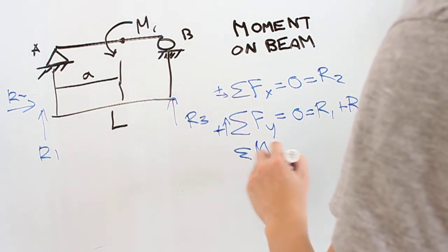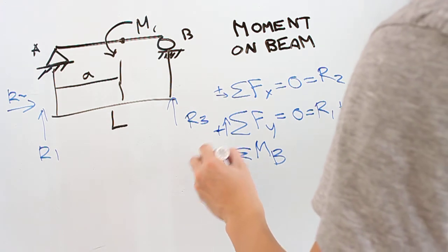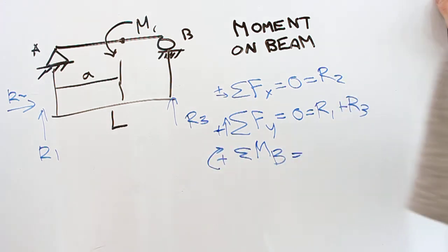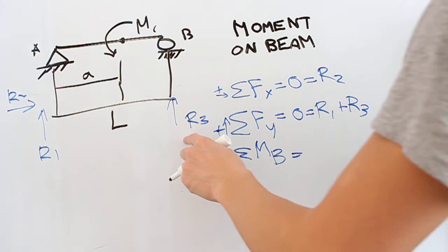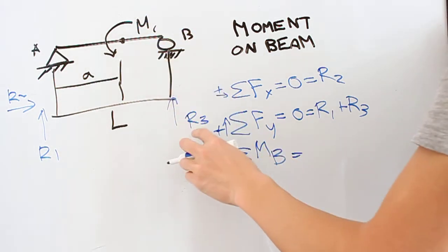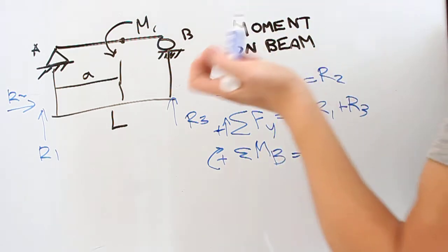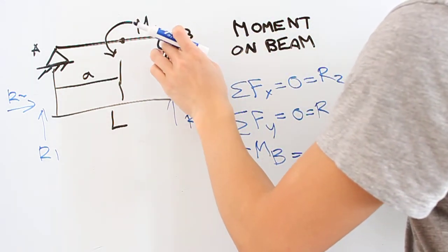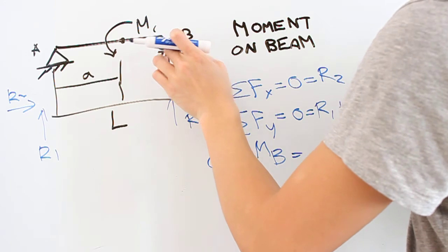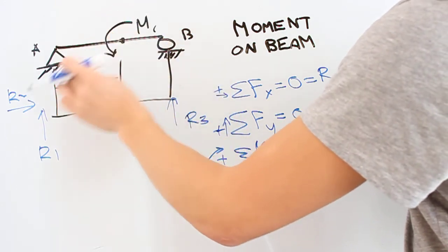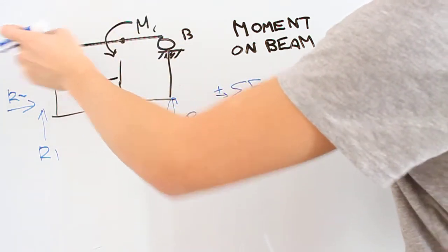Let's do it around point B again, just for our consistency. And what do we have here? At point B, we're not going to care about R3 again. Now, this is always kind of interesting. We're saying that we're calculating the moment around this point. But we have this moment at point A from this side, so it's not on point B.